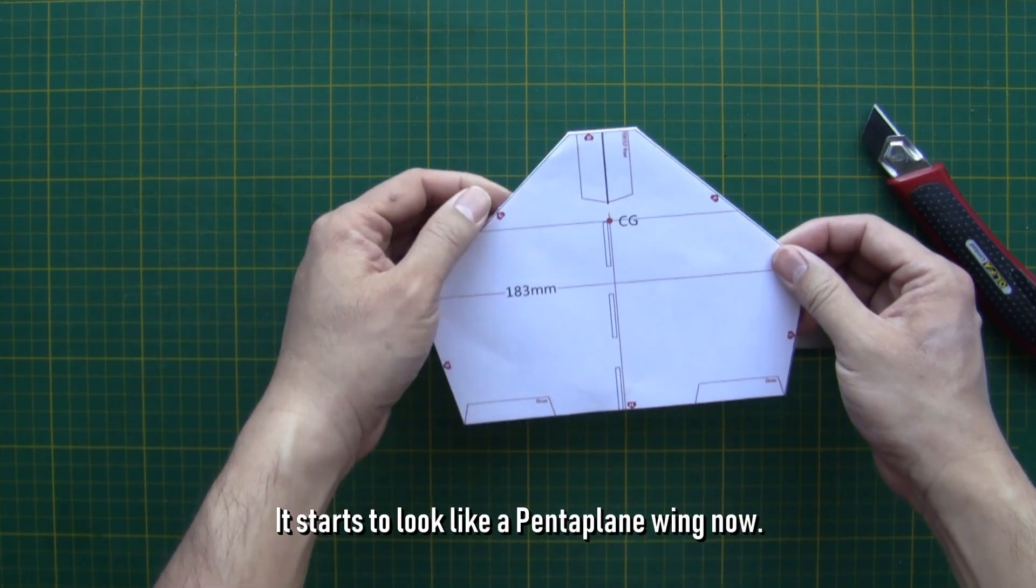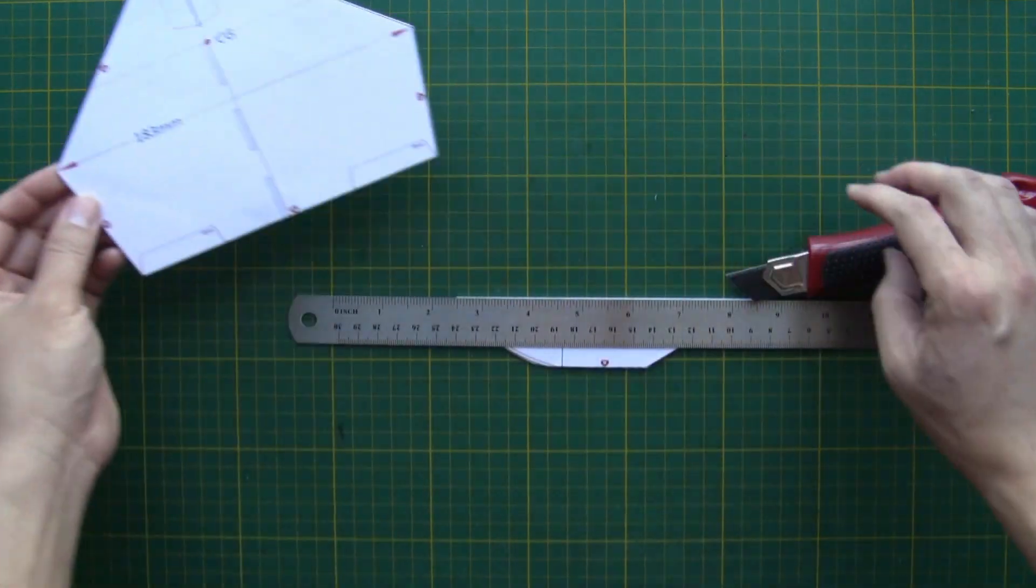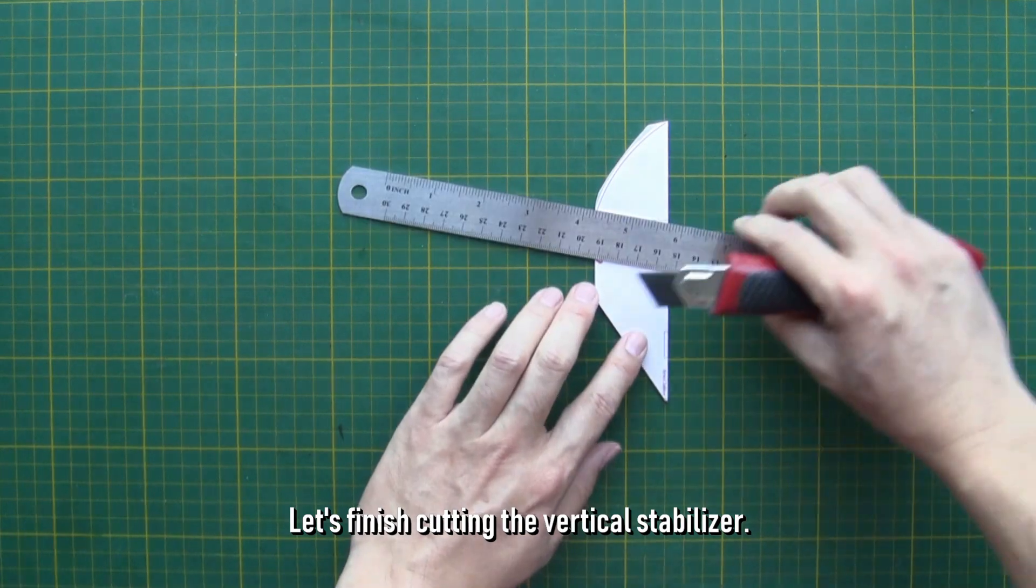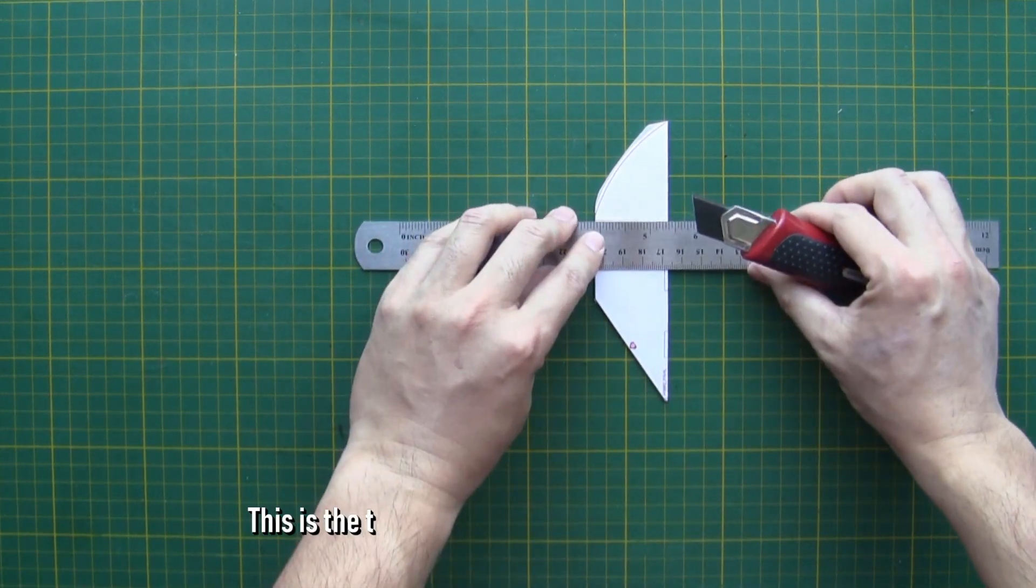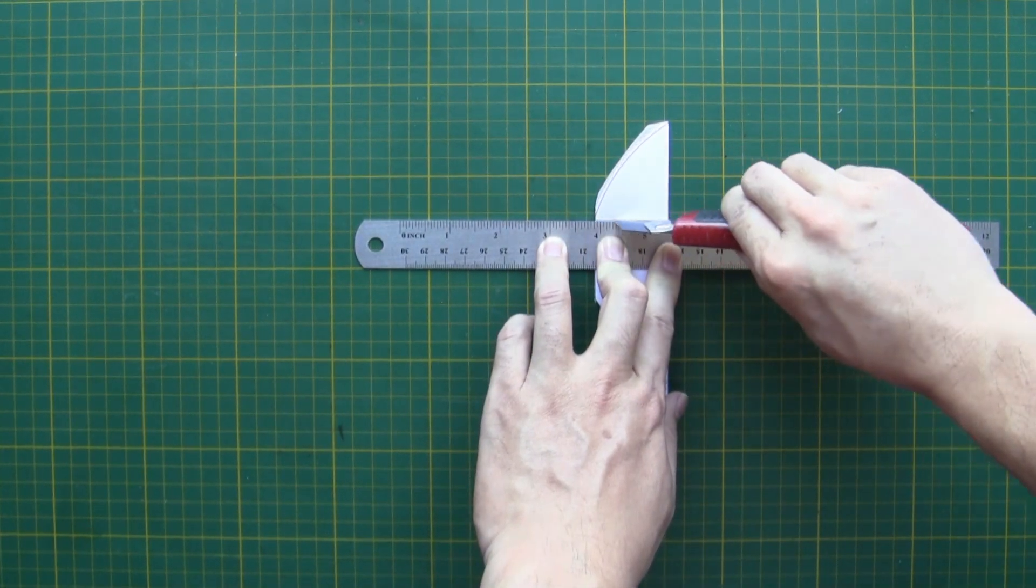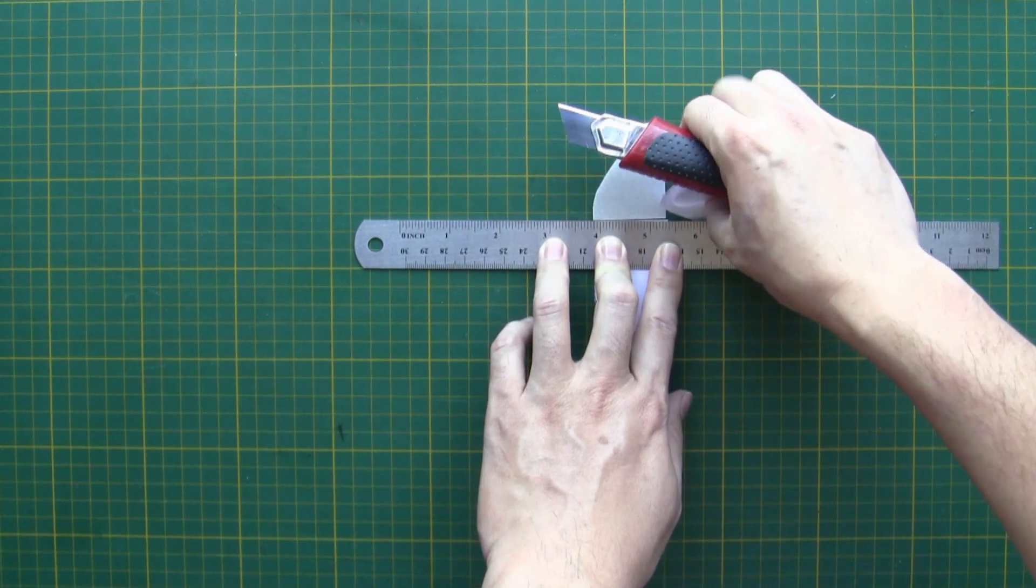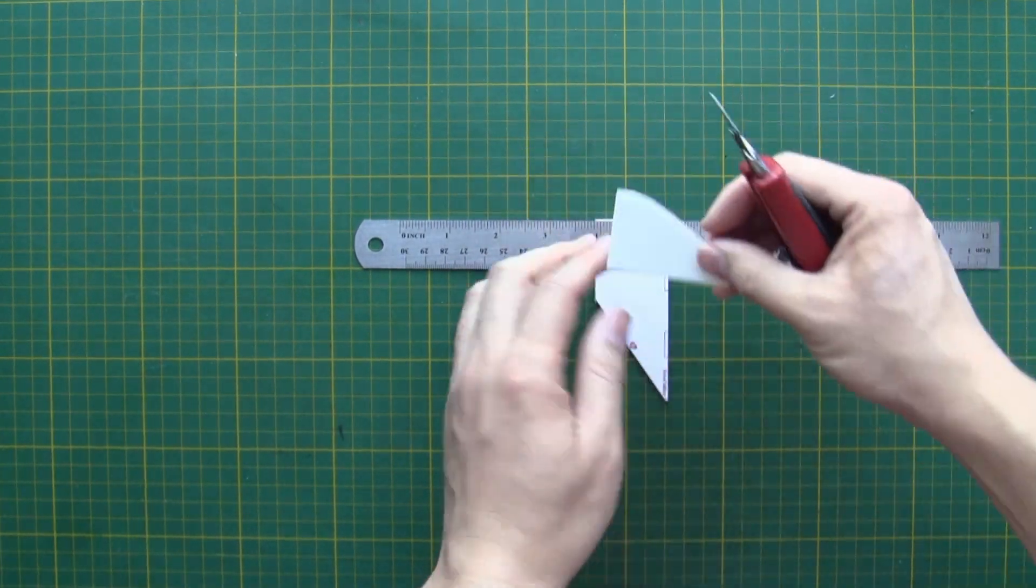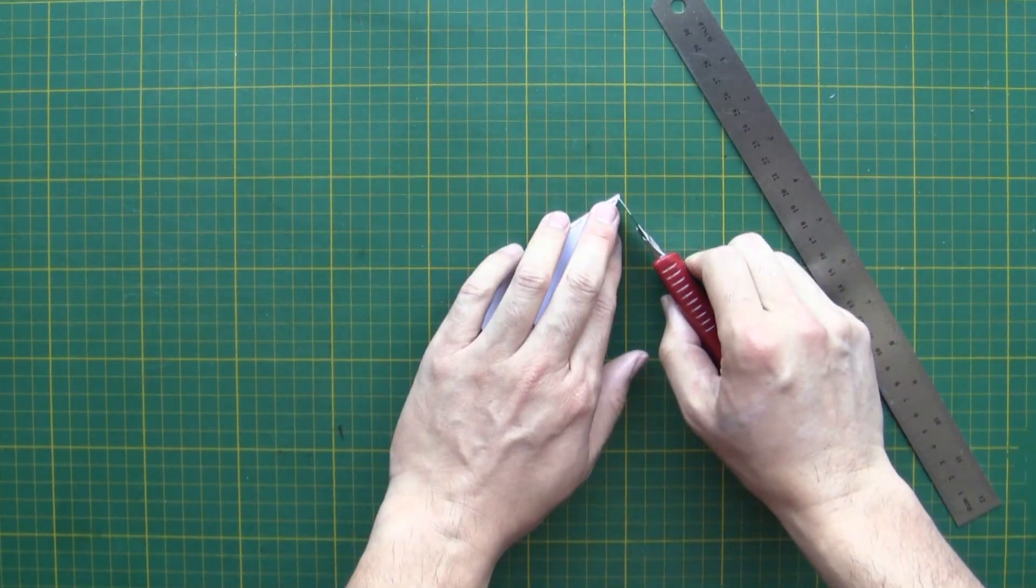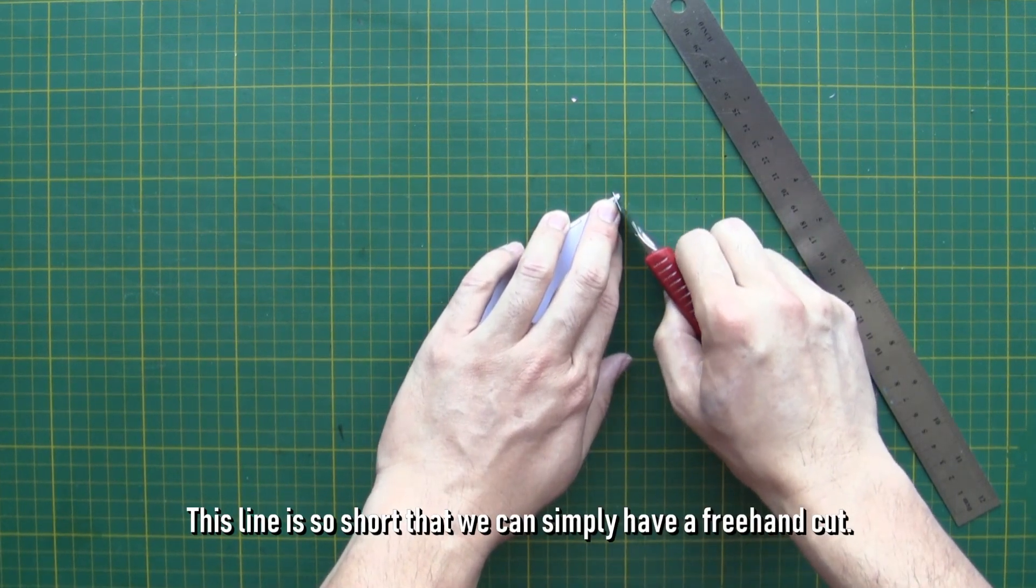It starts to look like a pentaplane wing now. Let's finish cutting the vertical stabilizer. This is the trailing edge of the vertical stabilizer. This line is so short that we can simply have a freehand cut.